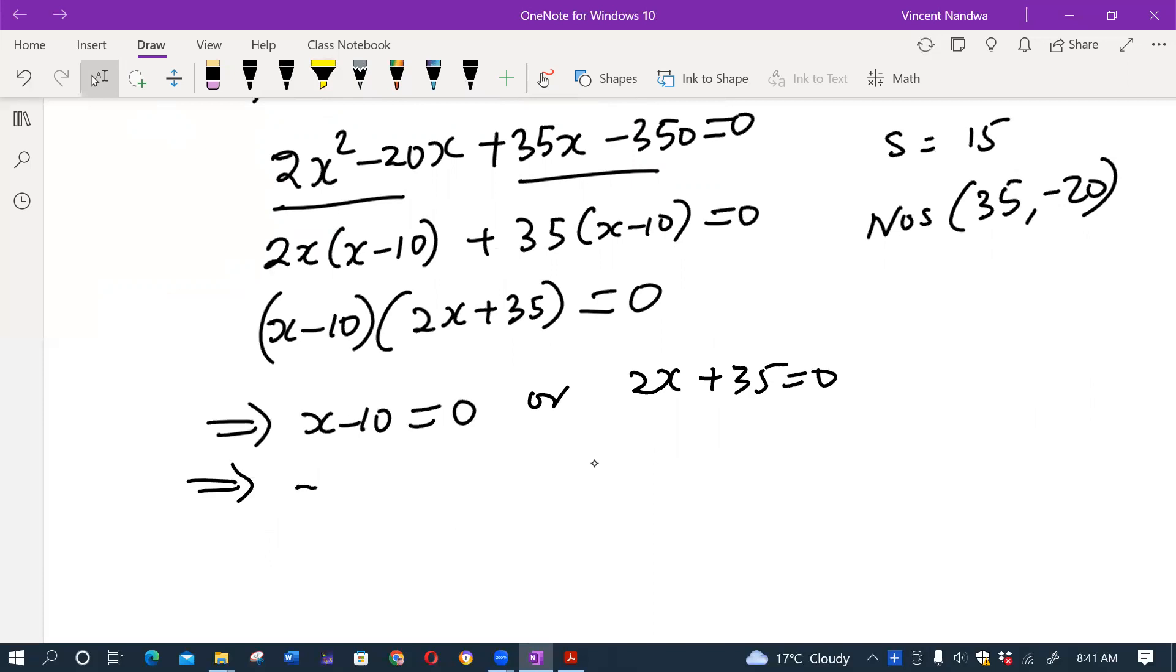This means x equals 10 or x equals minus 35 over 2. We'll ignore the negative value because it's unrealistic—we expect x to be positive.